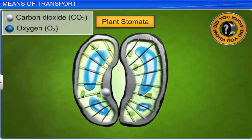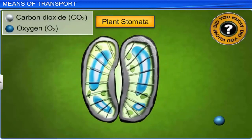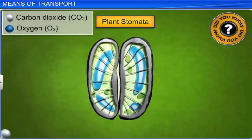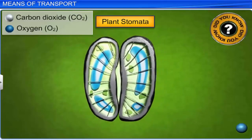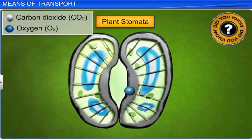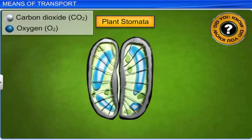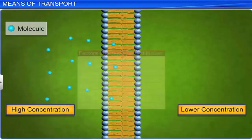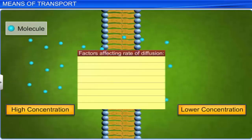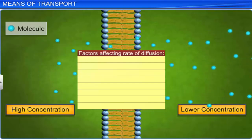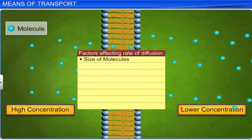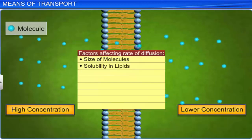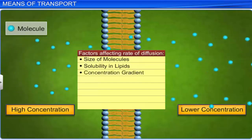Diffusion is the only means of gaseous transport in plants. Gases such as oxygen and carbon dioxide enter and exit stomata via diffusion. The rate of diffusion is affected by several factors, such as the size of molecules, their solubility in lipids, and the concentration gradient.